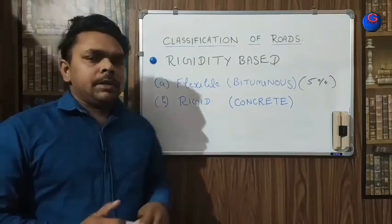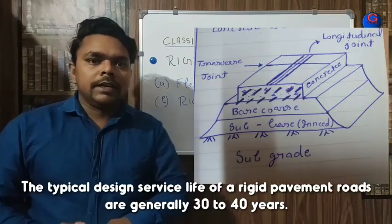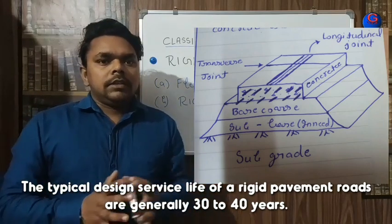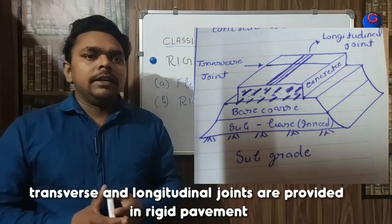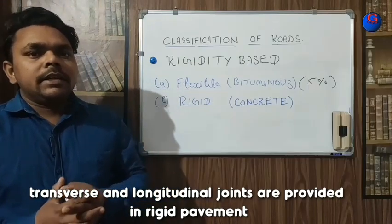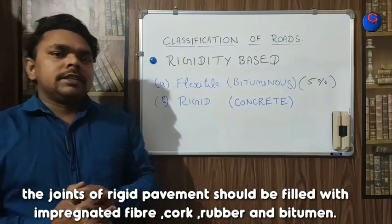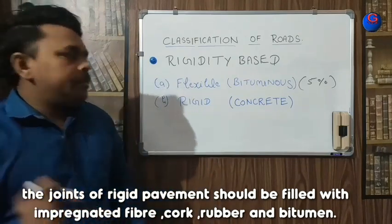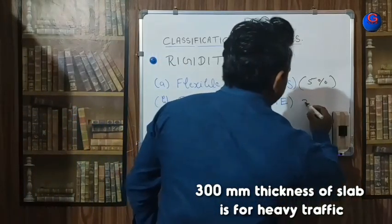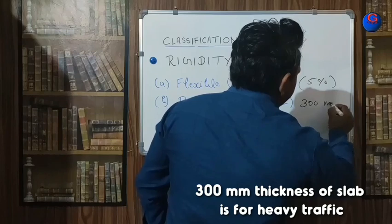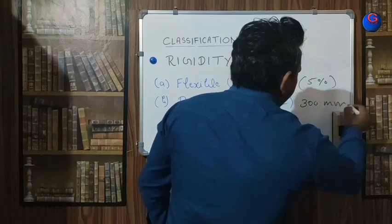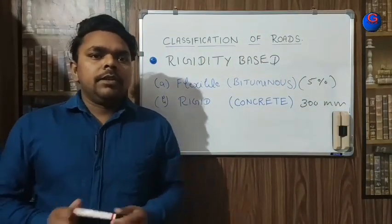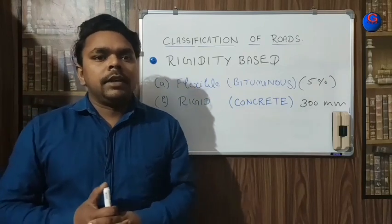Rigid pavements, also called concrete pavements or concrete roads, are very hard in nature. They generally consist of one concrete slab with a minimum thickness of 300 mm. The grade of concrete used in concrete roads should be at least M40.